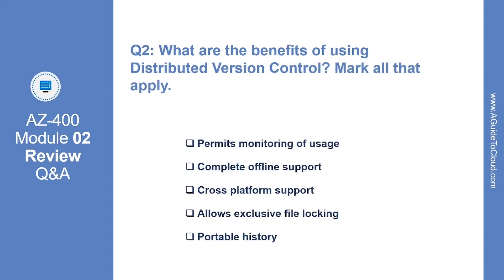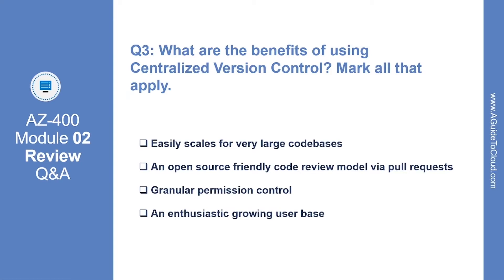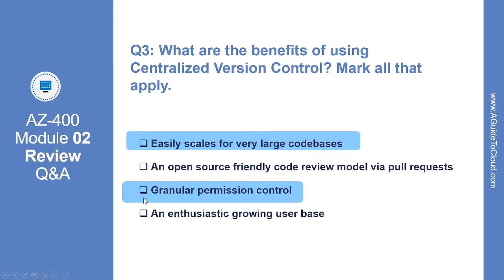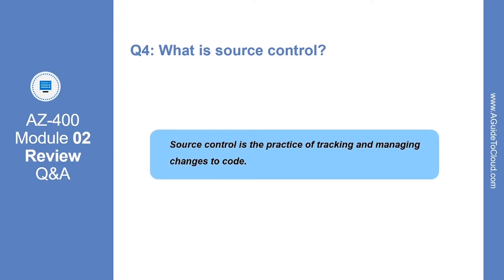Question number 2: what are the benefits of using distributed version control? Select all. The right answers are complete offline support and cross-platform support. Question number 3: what are the benefits of using centralized version control? The right answers are easily scales for very large code bases and granular permission control. Question number 4: what is source control? Source control is the practice of tracking and managing changes to code.